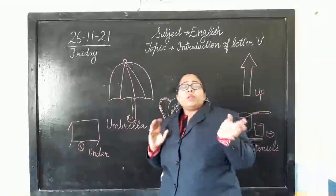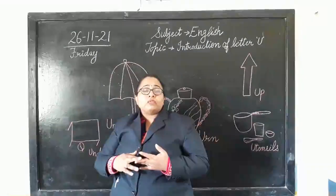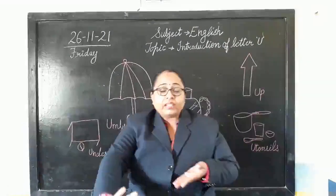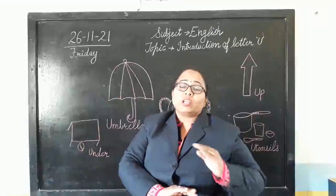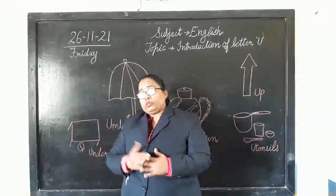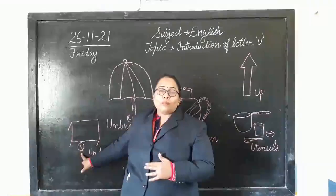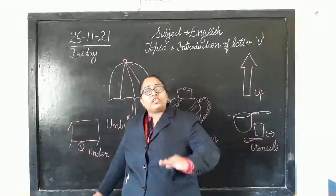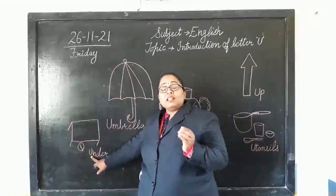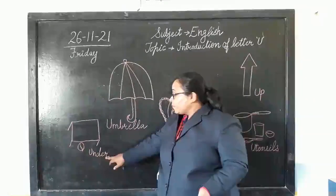Now, when we are playing with a ball or some toys and that toy goes and gets under the table — when something is placed below something else — we call it 'under.' Under means neeche. Again, it begins with letter U. Let's say the words once again: under, umbrella, urn, up.